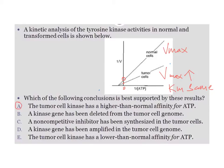Let's evaluate the answer choices. Option A says the tumor cell kinase has a higher than normal affinity for ATP. Higher than normal affinity means Km should be decreased — lower the Km, higher the affinity. But we have already seen that Km remains the same between the normal cells and tumor cell kinases, whereas option A implies Km is lowered, so that doesn't fit here.